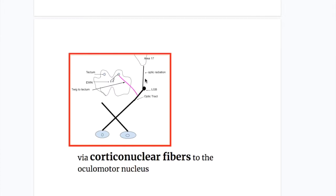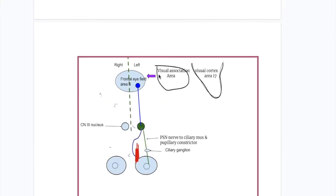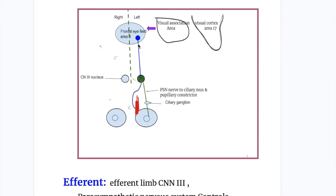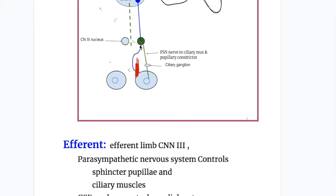From the optic tract to the lateral geniculate body, then optic radiation to the visual cortex, from the visual cortex and association areas 18 and 19, via the superior longitudinal fasciculus to the frontal eye field area 8, and from the frontal eye field via corticonuclear fibers — shown in blue — to the oculomotor nucleus. The efferent pathway then goes from the oculomotor nucleus via the oculomotor nerve to the medial rectus muscle, and to the pupillary constrictor fibers and ciliary muscles via the parasympathetic nerve, after relaying in the ciliary ganglion.